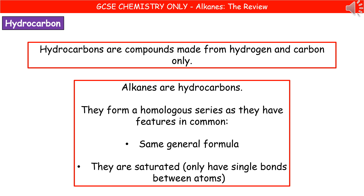Today's chemistry check is for those of you doing GCSE chemistry, focusing on C6: the alkanes. First point — what is a hydrocarbon? Hydrocarbons are compounds made from hydrogen and carbon only. That word 'only' is important, so make sure you include it.